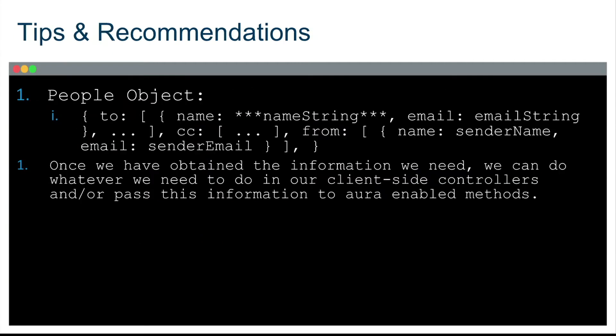Here's an example of what the actual people object looks like. It's an object with three arrays — it contains to, cc, and from emails. From here we can do any kind of special things we need to do in our client-side controller, pass it to our backend controller, perform queries, return records, things of that nature.